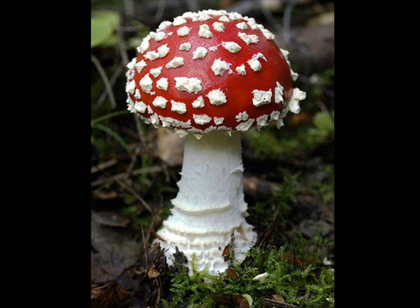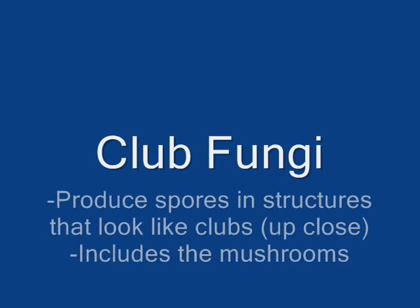One of my favorites — the classic toadstool mushroom. This is a member of the club fungi. This group includes about 25,000 species of mushrooms, bracket fungi, plant parasites, and puffballs. Club fungi produce spores in structures that look like clubs. That doesn't necessarily mean you're going to be able to see that; it's usually a much smaller structure that you look at under a microscope, but it's going to have a nice club-like structure to it.